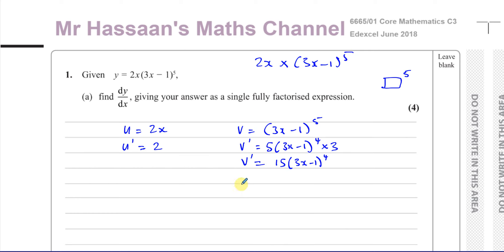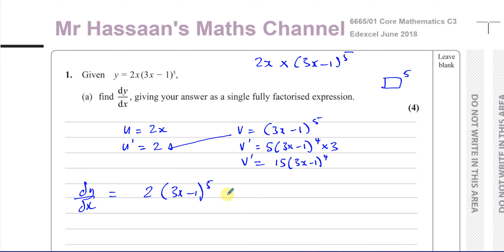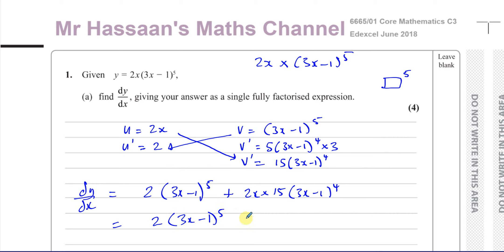When we want to find dy/dx, we multiply v by u' and u by v'. So we have 2 times (3x minus 1) to the power of 5, plus 2x times 15 times (3x minus 1) to the power of 4. I like to use this order because with the quotient rule we have to start in this order and we're subtracting, so it's important to keep the order consistent. This gives us 2(3x minus 1)^5 plus 30x(3x minus 1)^4.